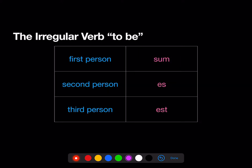For the irregular verb to be, the first person form is sum, meaning I am. The second person form is es, meaning you are. And the third person form is est, meaning he, she, it — or Metella, the dog — is.